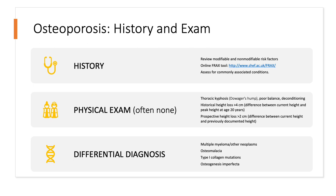Our differential diagnosis could be broad. We need to think about multiple myeloma, especially in somebody older than 60, as well as osteomalacia, vitamin deficiencies, collagen mutations, and osteogenesis imperfecta in patient populations presenting with fragility fractures.